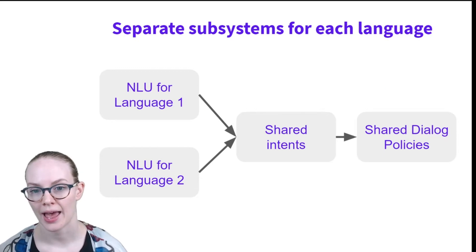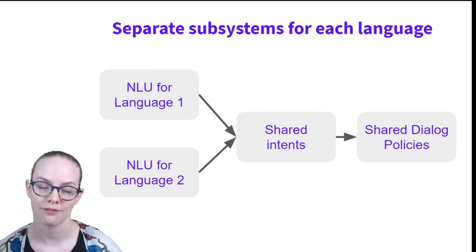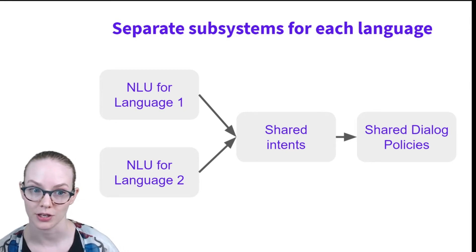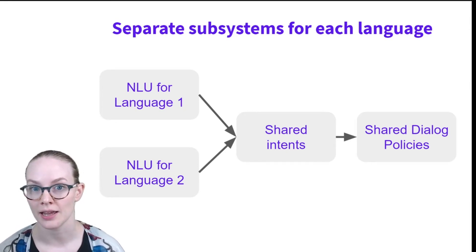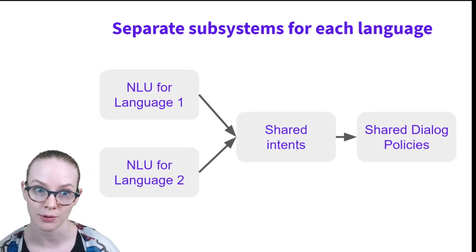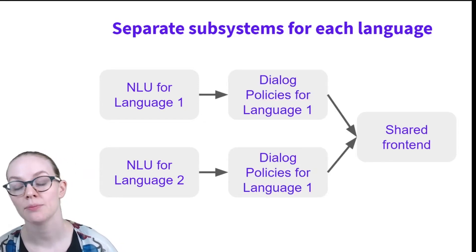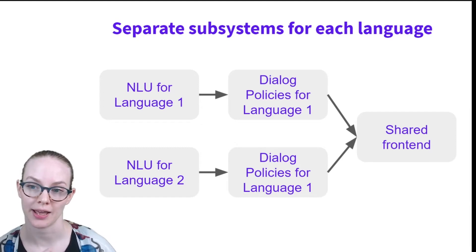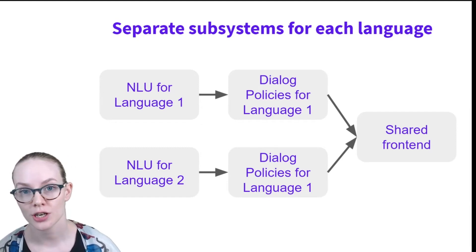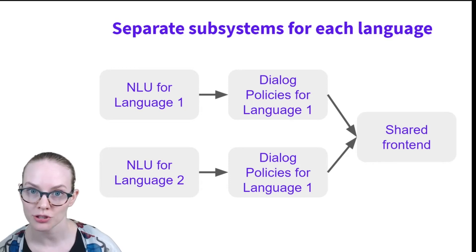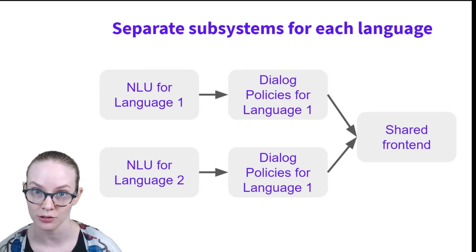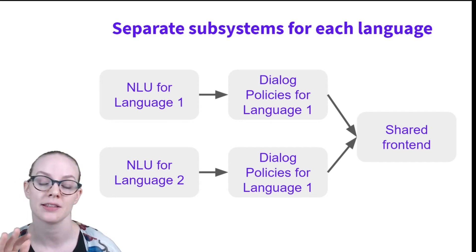For example, you may have an assistant where you have shared intents and dialogue policies between all of the languages, but the NLU is language specific and you have a separate NLU component for each of your input languages. Or you may have completely separate assistants with separate NLU and separate dialogue policies that share the same front end. So from a user standpoint, the experience is the same except for the language that they use, but from a backend standpoint, they're separate systems.